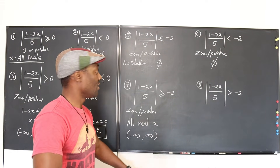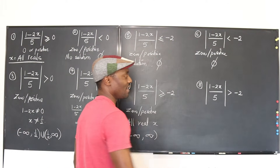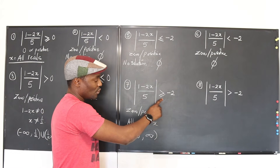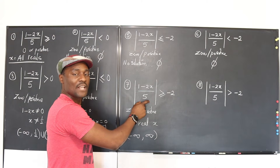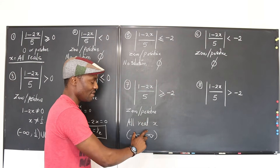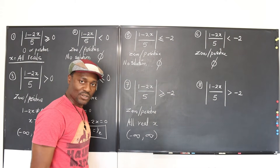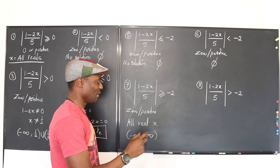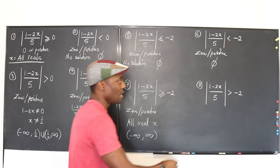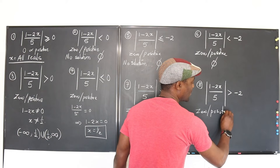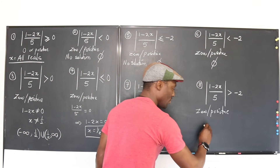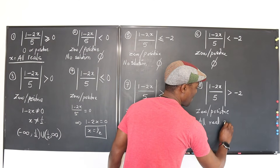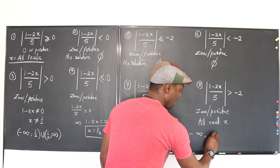Number eight: the absolute value of the expression is greater than or equal to negative 2. This and number seven are essentially the same situation. The output is either zero or positive. Is it always greater than or equal to negative 2? Yes — so the solution is again all real numbers. You can write it in interval notation from negative infinity to positive infinity.